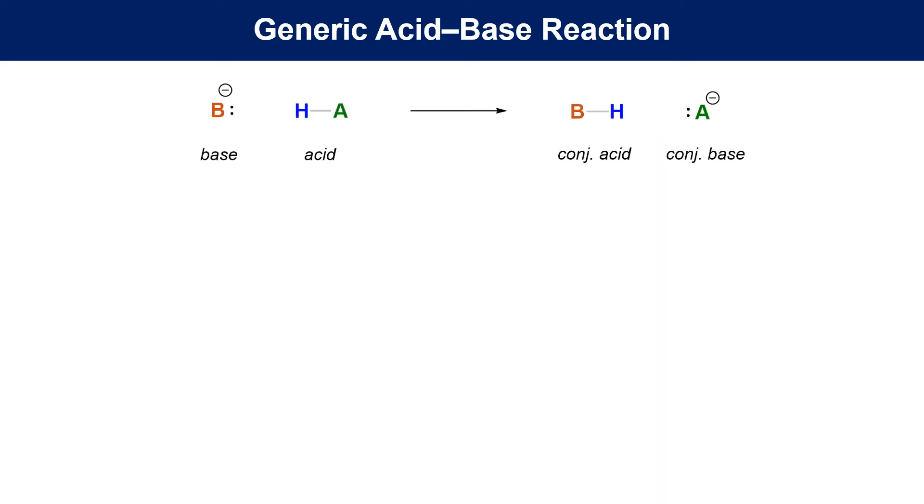In any acid-base reaction, we need to describe how an electron-rich base interacts with an electron-poor acid to convert to the corresponding conjugate acid and conjugate base. We need to remember that orbital overlap is involved and that the non-bonding lone pair orbital from the base needs to overlap with the antibond of the HA bond to get the reaction going.